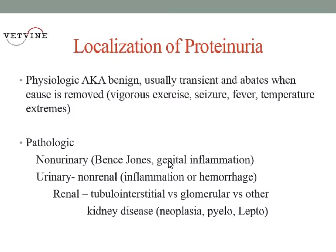So then we move to urinary. And again, we can have non-renal or renal. Inflammation or hemorrhage can cause false positives if there's leakage of albumin into the urinary tract. Our systematic algorithms — if you have localized that it's renal and ruled out all the other causes — it can be tubular, tubular interstitial, or it can be glomerular, or it can be other kidney disease. Any kidney disease — neoplasia, pyelonephritis, leptospirosis — they can all cause renal proteinuria. The topic we're going to focus on is chronic kidney disease, but any kidney disease can cause proteinuria.